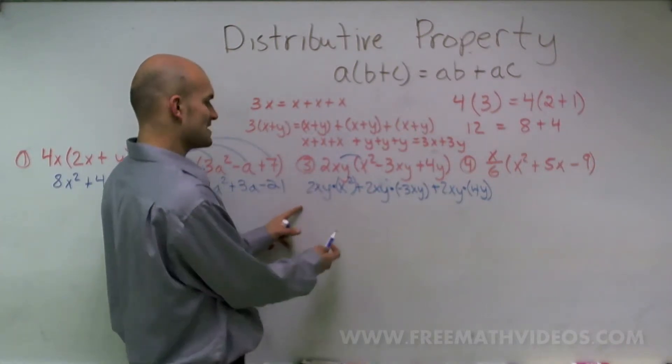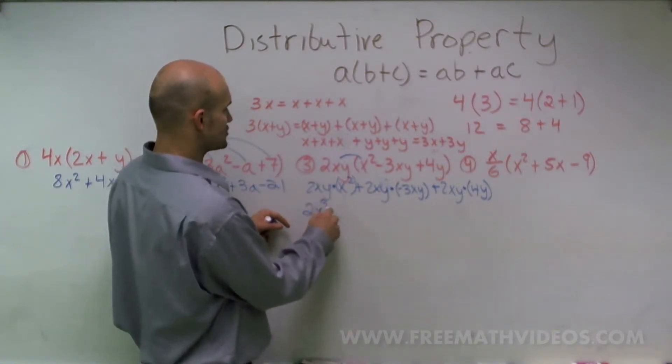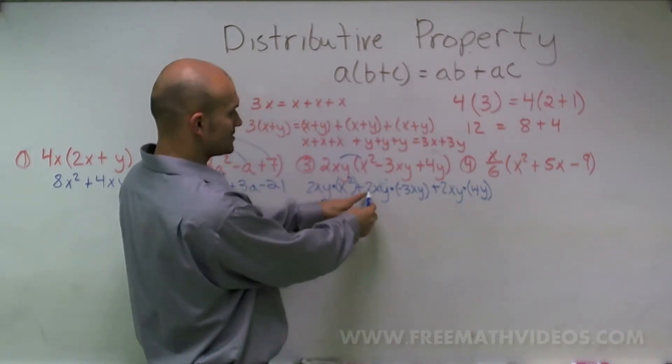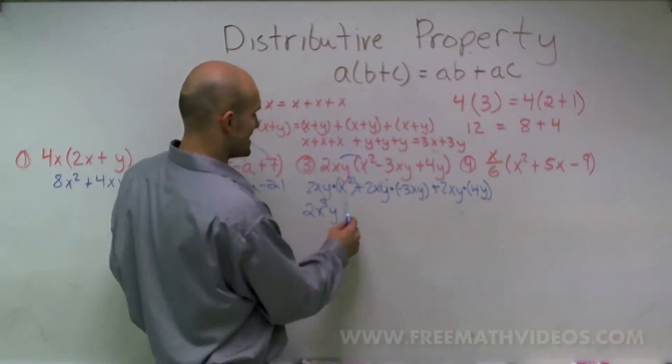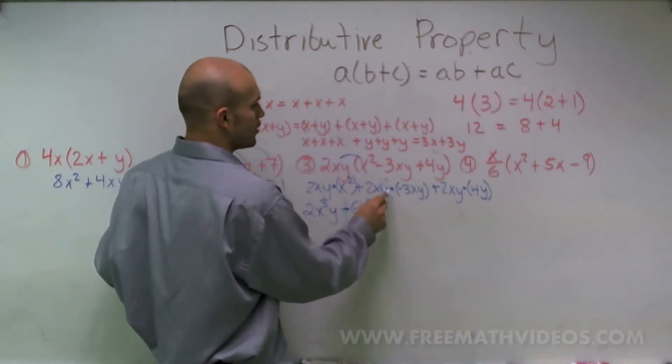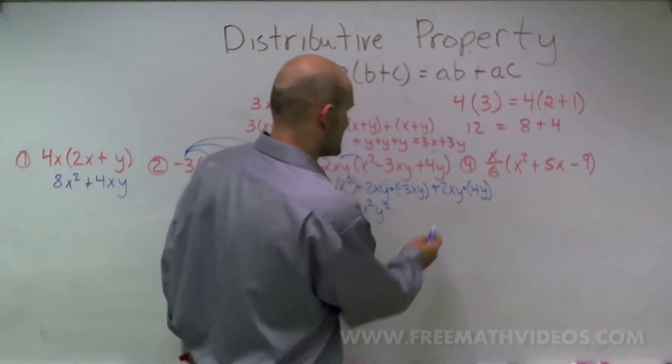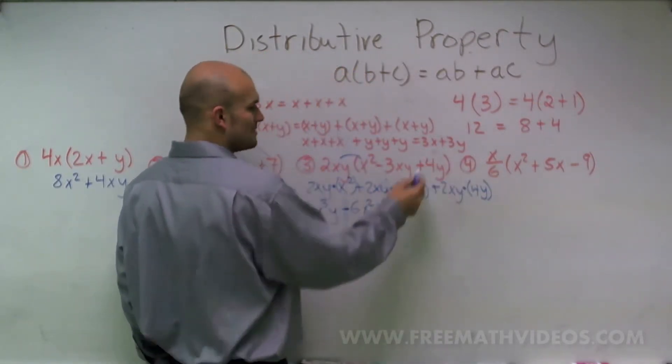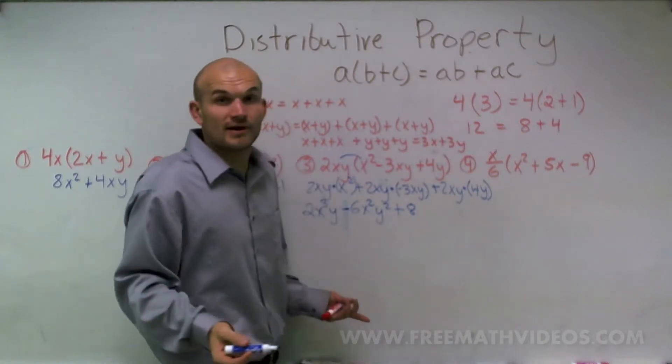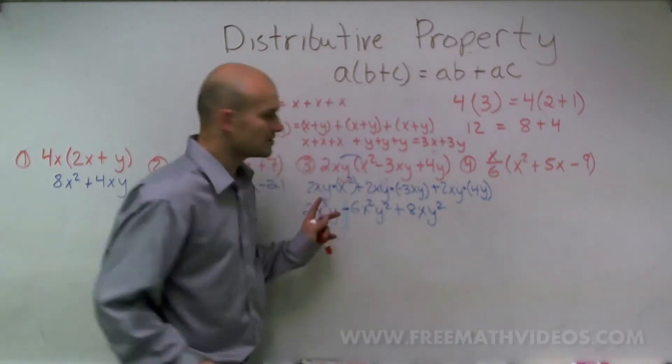So when I multiply 2xy times x squared, I can multiply x times x squared, add the exponents. So I get 2x cubed y. Here, instead of writing the plus, notice I'm going to multiply 2 times a negative 3. That's going to give me a negative 6. So this term is actually going to be negative. x times x is x squared. y times y is y squared. And then over here, again, I'm going to be multiplying two positive numbers. So I have 2 times 4, which is 8. And then x times nothing, so x is just going to be there still. And then y times y is y squared. So that's how you work out that problem.